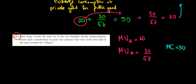Let's solve the last part of this question. In part D, how large would the park be if the two families decide independently about their contribution to the park size?